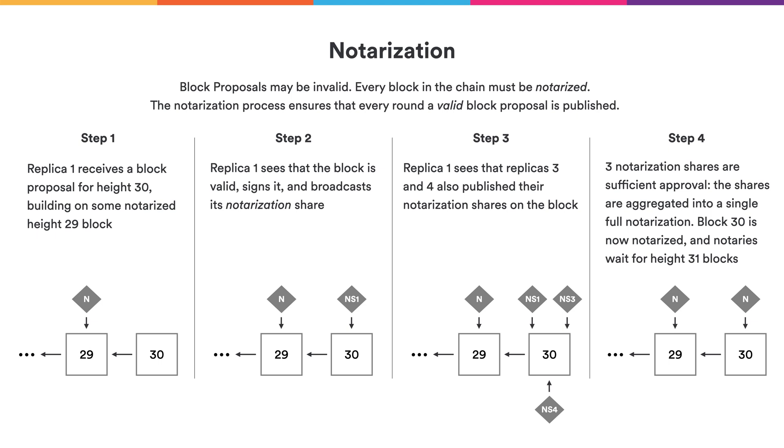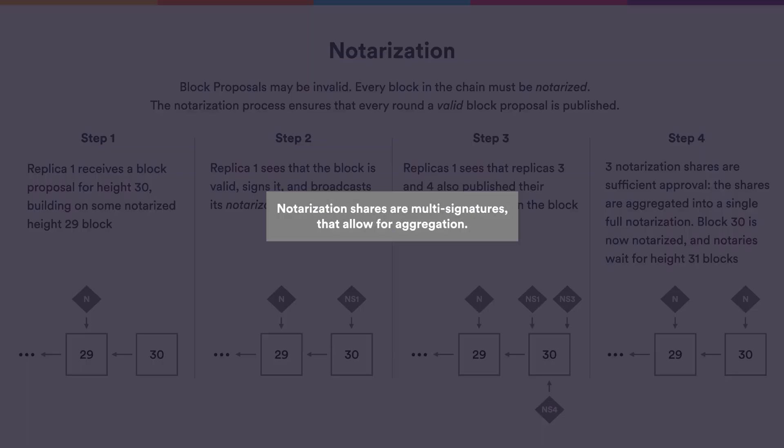The notaries will now move on to the next round and start looking for height 31 blocks. For these notarization shares, we use special signatures called multi-signatures. Multi-signatures have the nice property that many signatures on the same message can be compressed into a single constant-size signature that proves all the nodes approved. This means that even if we have a very large subnet with many notaries, the notarization will still be a small object.